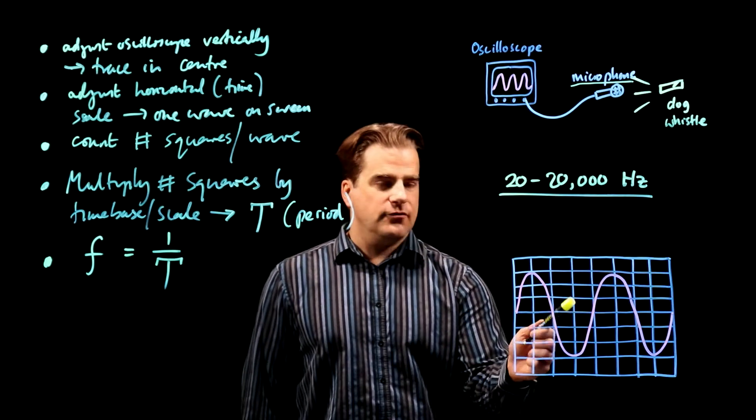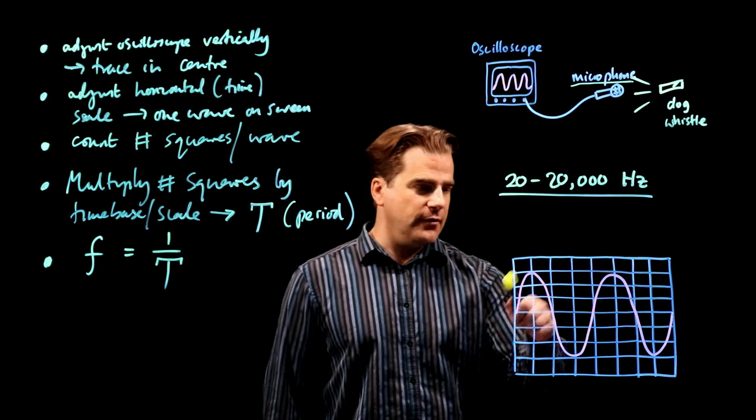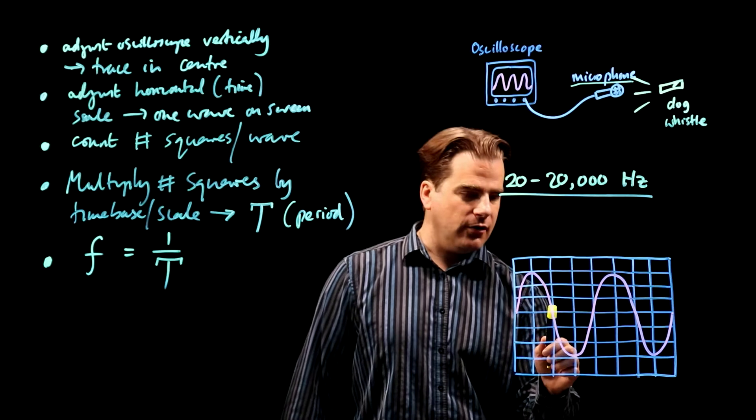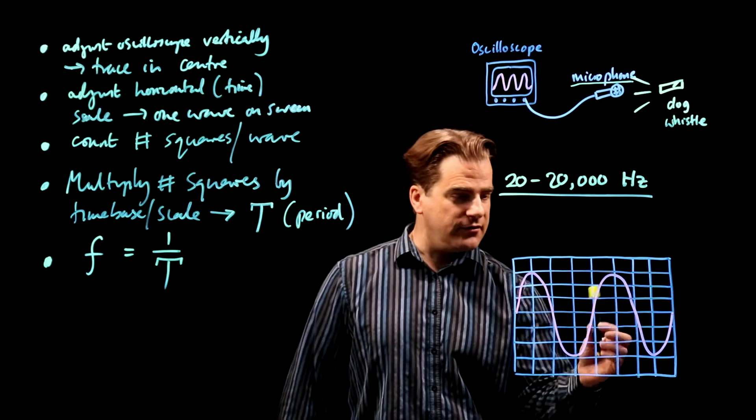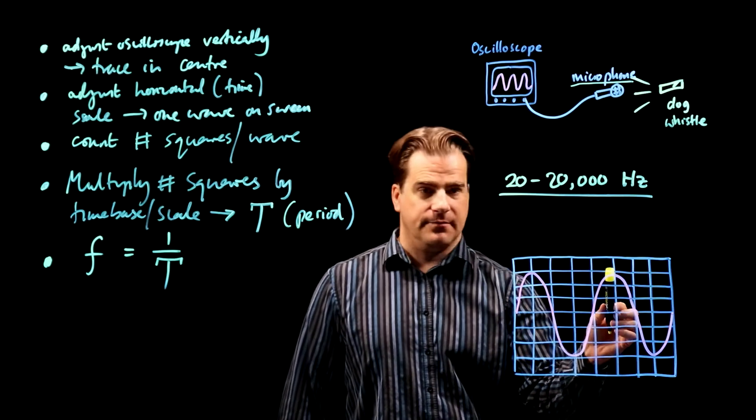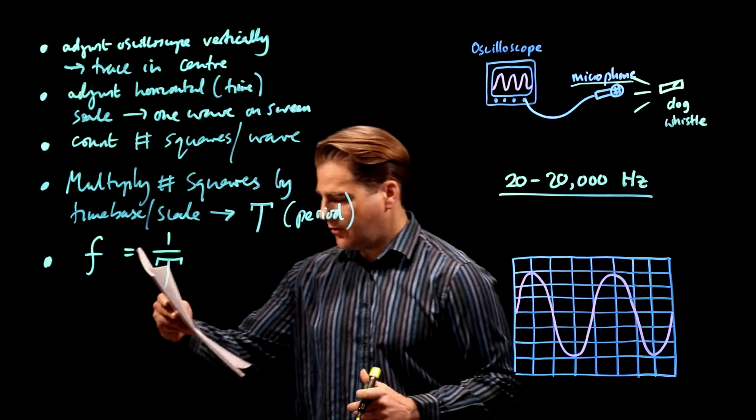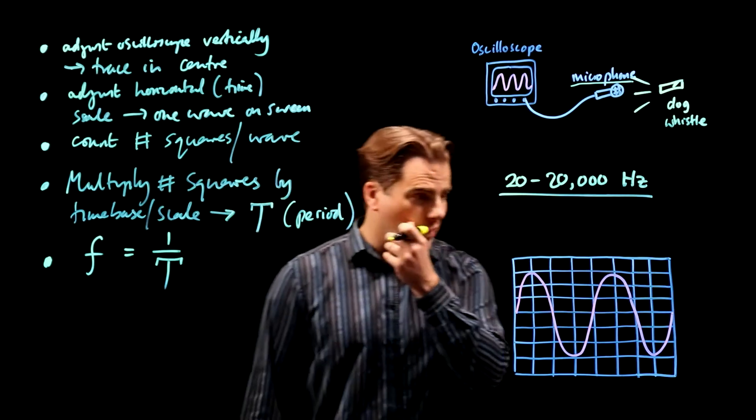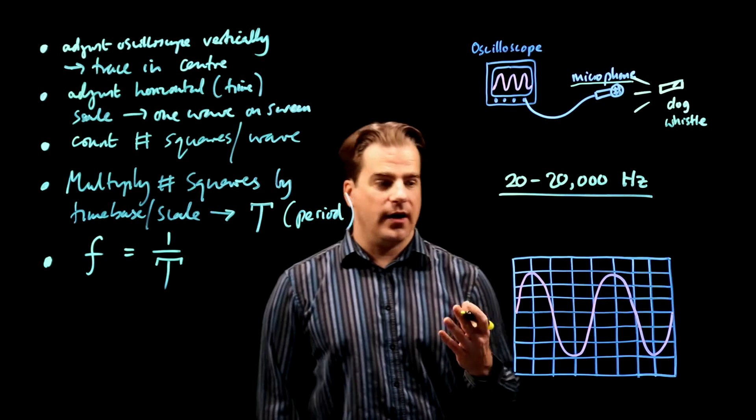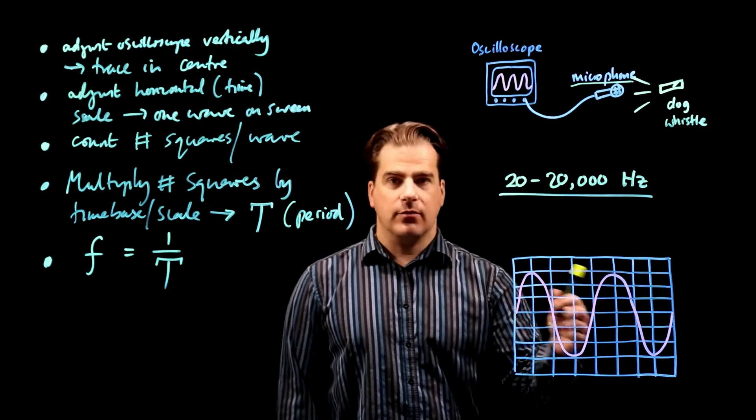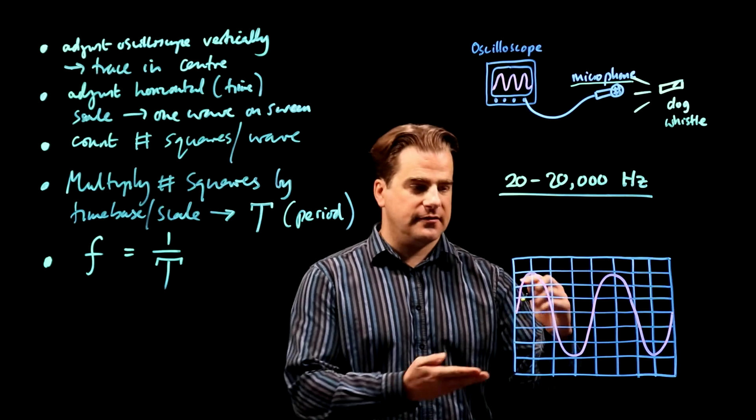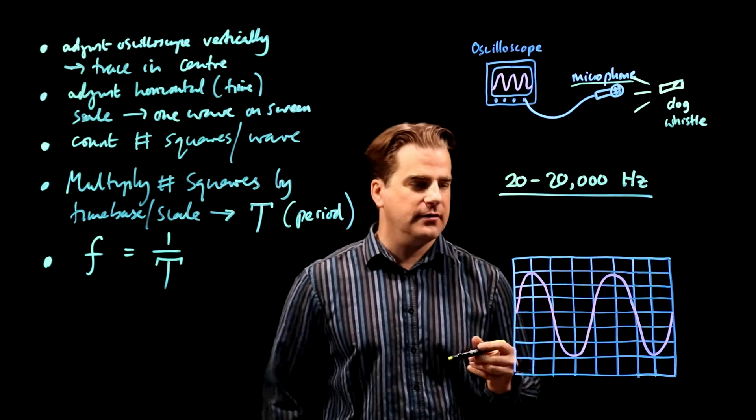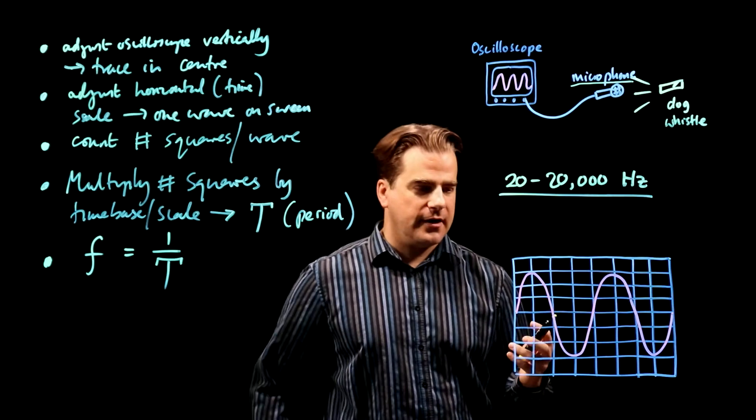On the drawing, they've given you a wave that has a period of four squares and an amplitude of three. And you have to draw a quieter sound with double the frequency. First thing, quieter. For sound waves, quieter means less amplitude, a smaller amplitude. For all waves, the greater the amplitude...